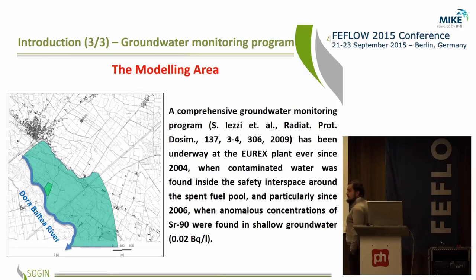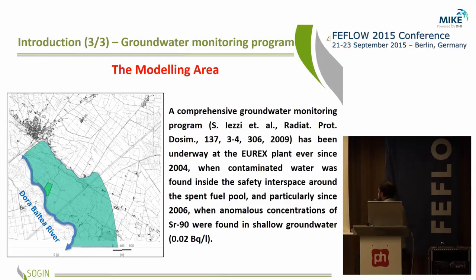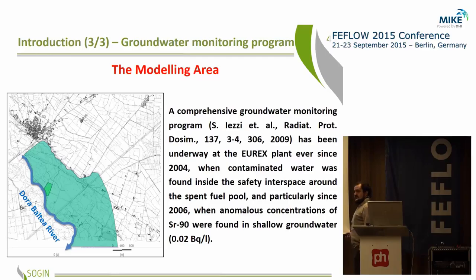Why did we perform a numerical model in this area? Because in 2004, contaminated water was found inside the safety interspace around the spent fuel pool. And in 2006, anomalous concentrations of Strontium-90 were found in the shallow aquifer.